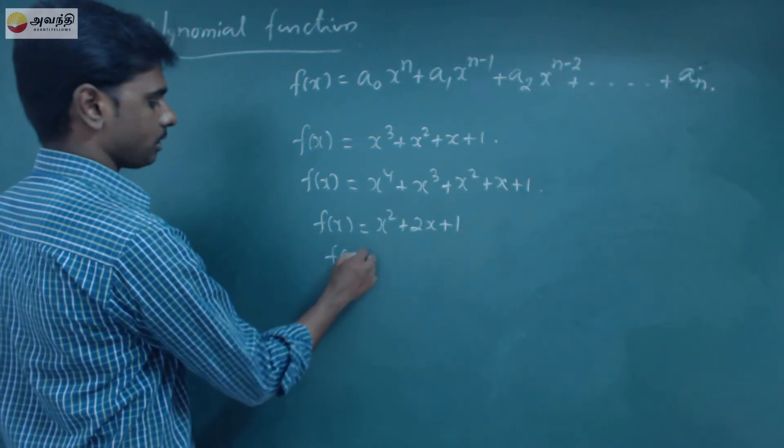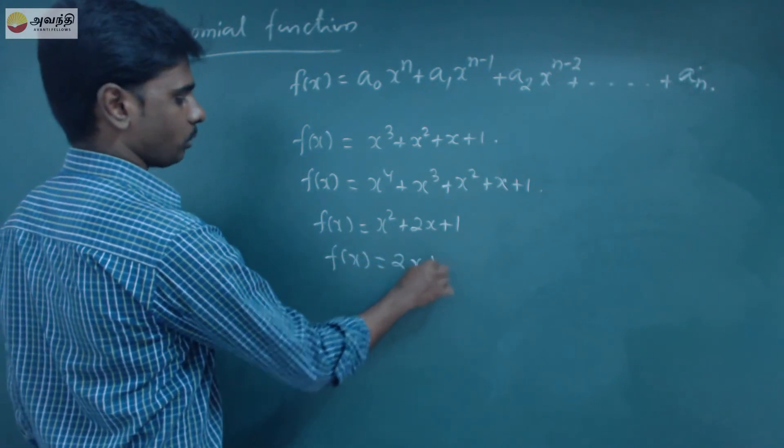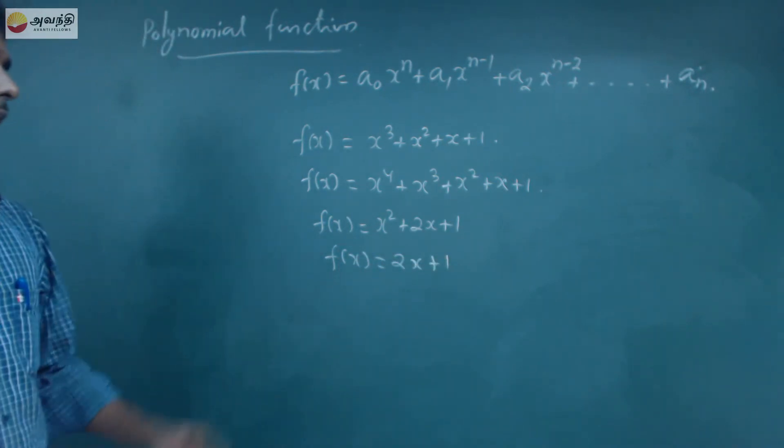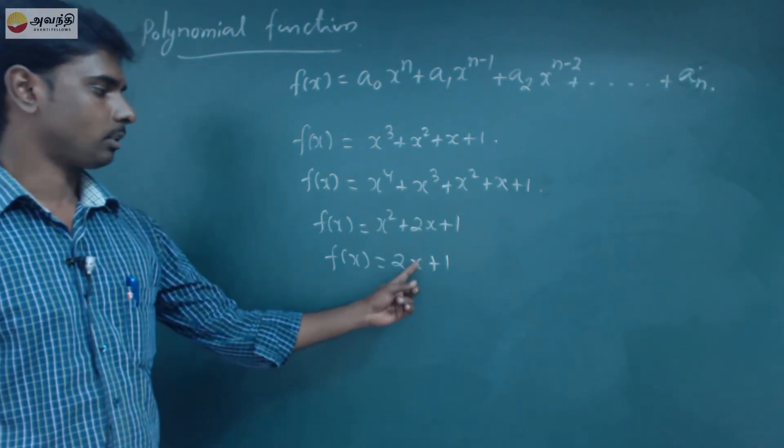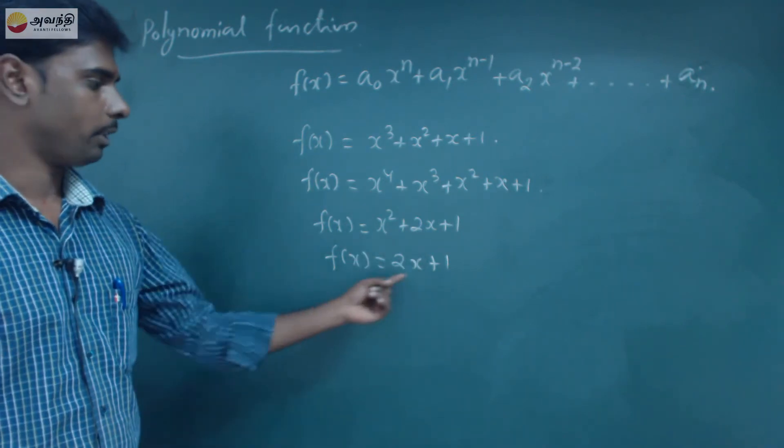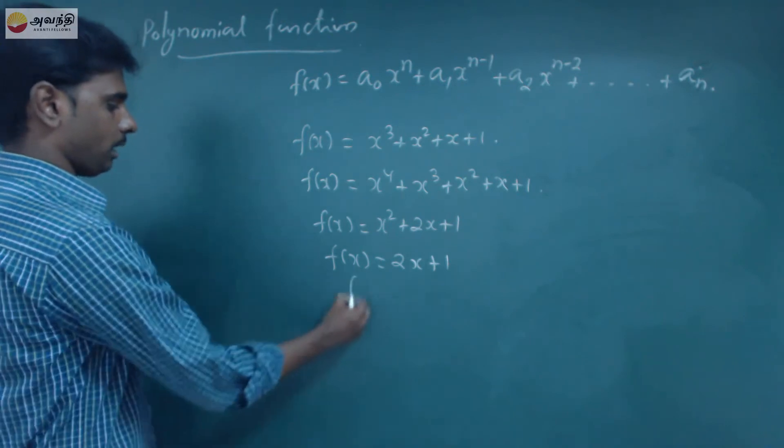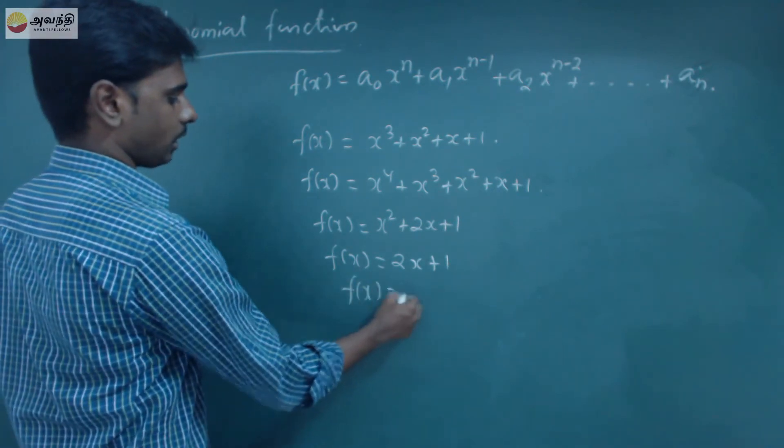Similarly, f of x is equal to 2x plus 1. This is one degree polynomial. If you look at x, it is equal to x. Then, this is one degree polynomial. Similarly, f of x is equal to 1.